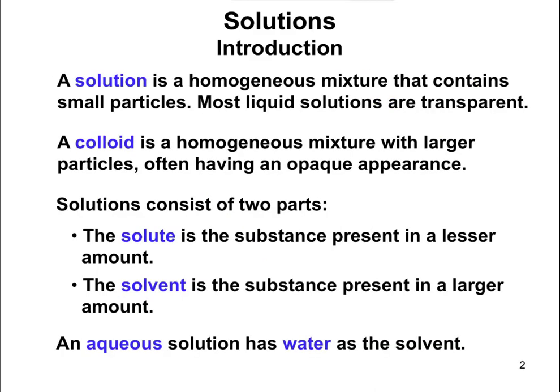When we talk about a solution, solutions are going to be exclusively homogeneous mixtures — the same throughout. Almost all solutions are going to be transparent. Colloids are when you have a homogeneous mixture with a more opaque, harder to see through appearance. An example of a colloid would be something like milk — you can't really see through it, whereas most other solutions you are able to see through.